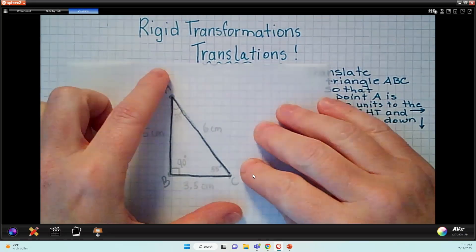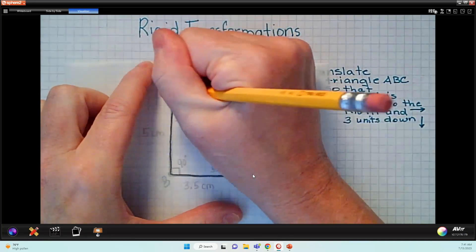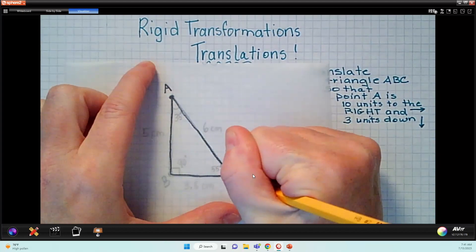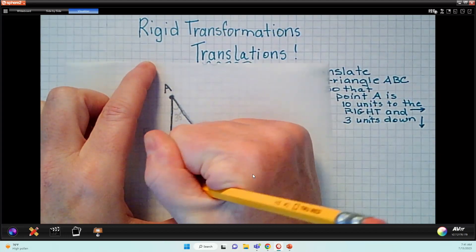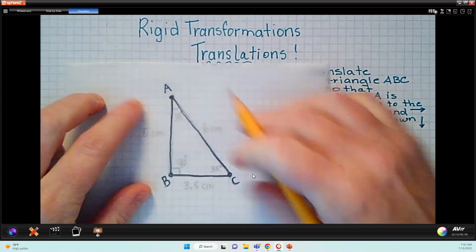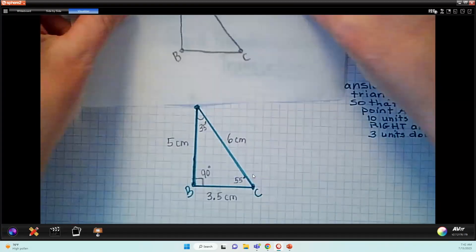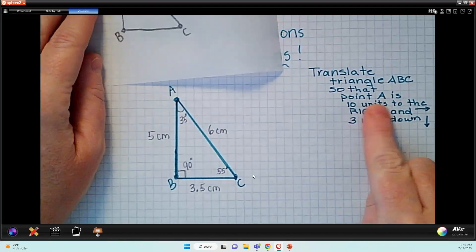This is nice because they keep the original on their paper. Then with their tracing paper, they can slide this and get it into location. Okay, so if I know I want to take this triangle and I want to translate this triangle so that point A is 10 units to the right,